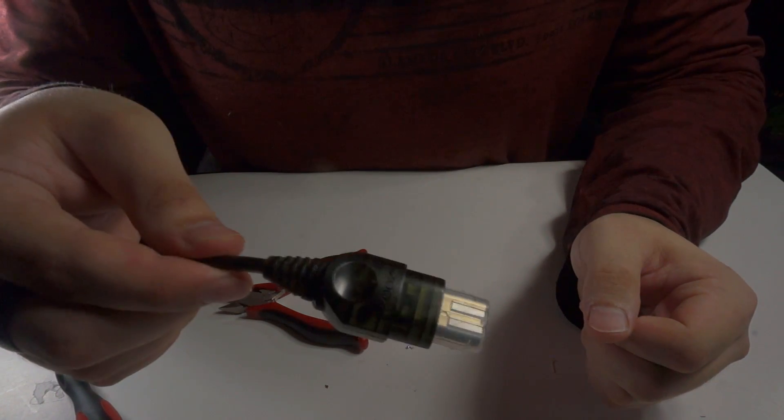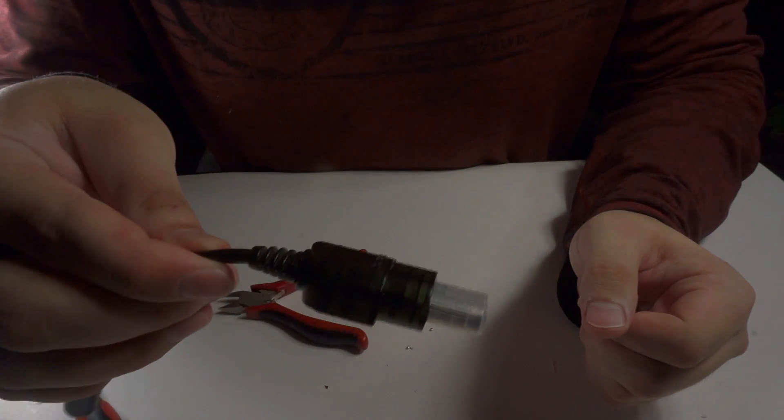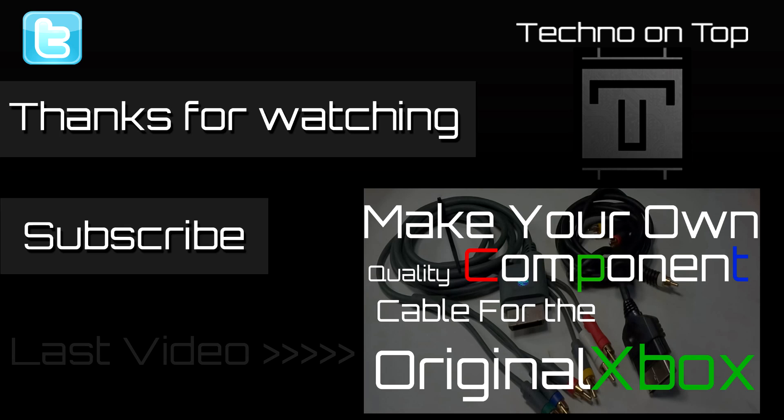Now you have a dongle that lights up green and it lights up good and it looks good. Thanks for watching. I hope this tutorial was able to help you. If it did, please leave a like. If you have any questions, leave a comment and subscribe for more modding goodness.